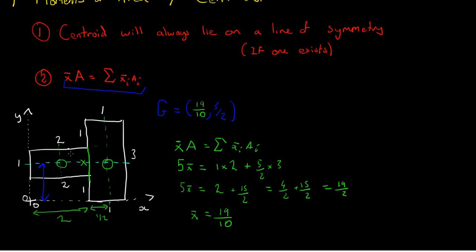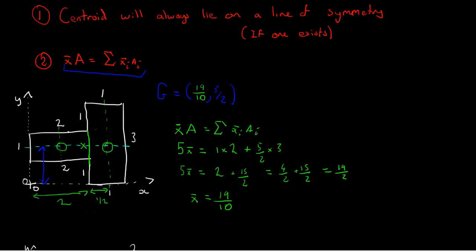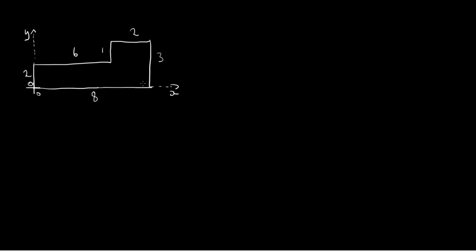So that was an example of a shape that has one line of symmetry. But what about if we have no lines of symmetry, such as this shape here? In this case, we can't apply symmetry to get one of the answers, so we need to apply the formula for both the x-coordinate and the y-coordinate. But we can do this conveniently using vector column notation to save us the effort of doing the calculation twice.